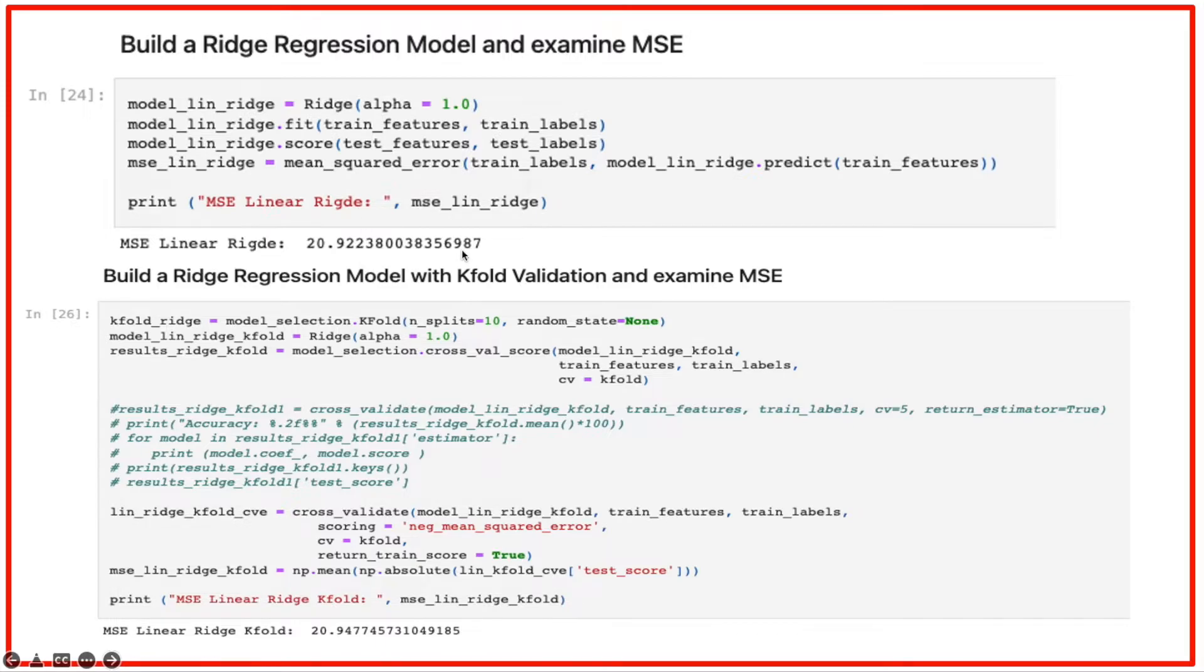Now let's try ridge regression with k-fold validation. This seems to be yielding a similar MSE that we saw in the previous cases. Both the regular linear regression and the ridge regressions with and without k-fold are somewhat in the same ballpark in terms of their mean square error.